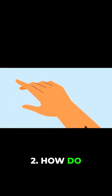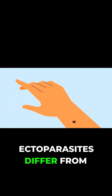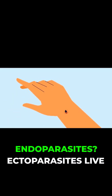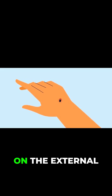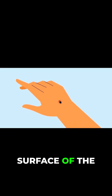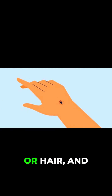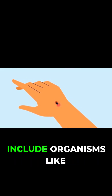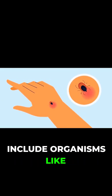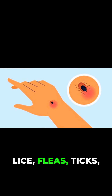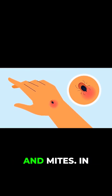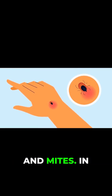Number 2: How do ectoparasites differ from endoparasites? Ectoparasites live on the external surface of the host's body, such as the skin or hair, and include organisms like lice, fleas, ticks, and mites.